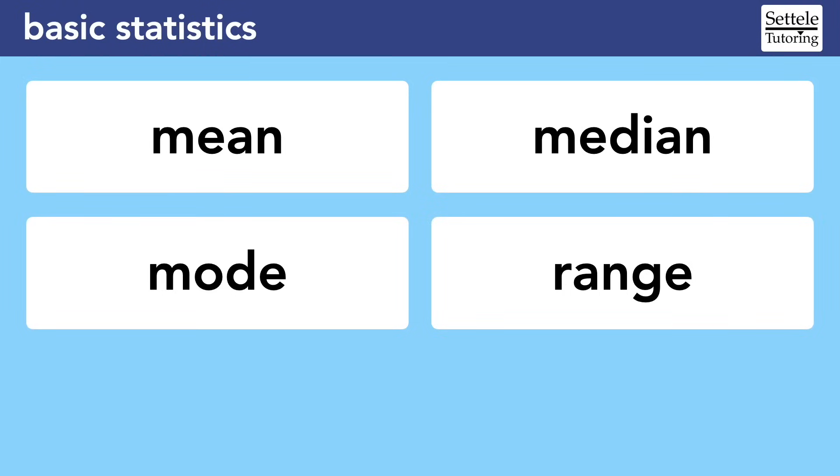The SAT tests a very limited number of statistics topics. Most of these questions fall into the problem-solving and data analysis portion of the math section, and most will involve some combination of the four main statistical measures: mean, median, mode, and range. If you can memorize the definitions for these four concepts, you should be able to handle most statistics questions on the SAT.